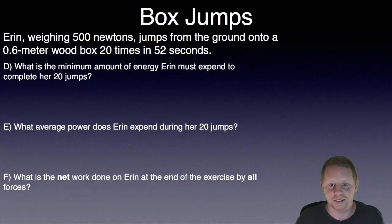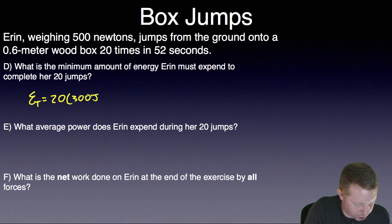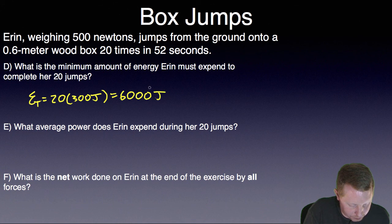We're almost done. What is the minimum amount of energy Aaron must expend to complete her 20 jumps? Well, if one jump was 300 joules, then the total energy must be 20 times 300 joules for 20 jumps, or 6,000 joules.